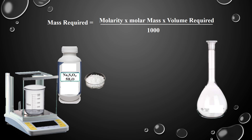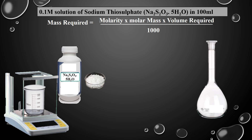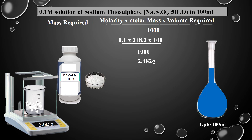To prepare 0.1 molar solution of sodium thiosulfate in 100 mL: put 0.1 in molarity, 248.2 in molar mass, and 100 in volume required. Divide the answer by 1000 mL — we get required mass 2.482 grams. Take 2.482 g of sodium thiosulfate in a beaker, dissolve in water, and dilute up to 100 mL. This is the 0.1 molar solution in 100 mL.